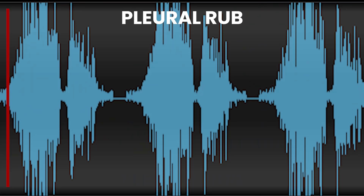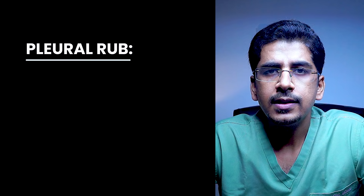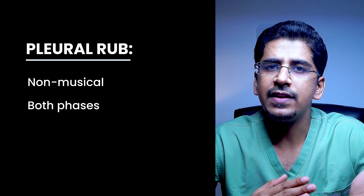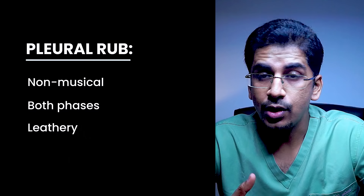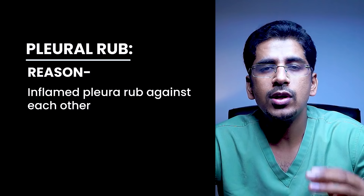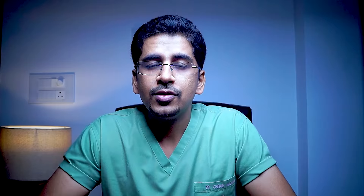Coming on to the last one — pleural rub. This is how it is heard. Pleural rub is non-musical and is present in both the inspiratory and expiratory phases. It is leathery in character. The reason for pleural rub is mainly inflamed pleura rubbing against each other, usually associated with pleuritic chest pain or local tenderness. These are the basic and main lung sounds or breath sounds.